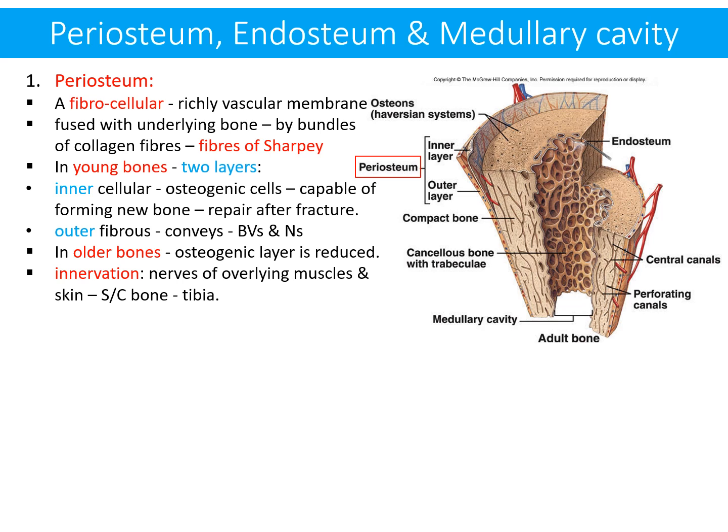The periosteum is a fibrocellular, richly vascular membrane fused with the underlying bone by bundles of collagen fibers named Sharpey's fibers. In young bones, two layers can be identified: an inner cellular layer containing osteogenic cells capable of forming new bone as in repair after fracture, and an outer fibrous layer that conveys blood vessels and nerves. In older age, the osteogenic layer is reduced. The periosteum is innervated by nerves of the overlying muscles and skin.